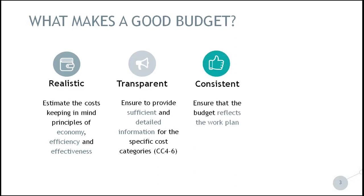As already pointed out, the budget should be consistent. Partners have to ensure that the budget reflects the work plan. For example, if a service is planned to be purchased, it is expected to have it reflected in the budget under the respective cost category — in this case, cost category 4, external expertise and services. And vice versa, if there are costs under a particular cost category, it is expected to find the deliverable that refers to it.